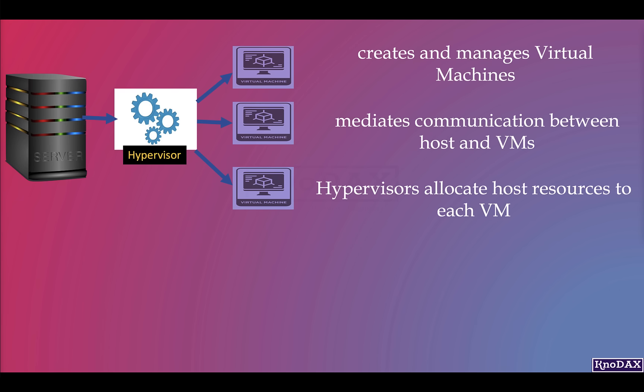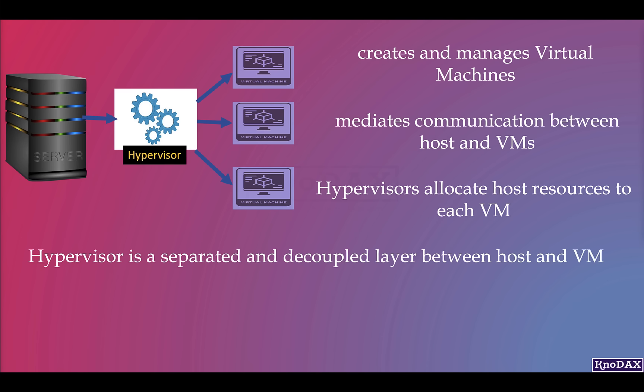Hypervisors allocate resources, or in other words, share host resources with each VM. Hypervisor is a separated and decoupled layer between the host and VM. A hypervisor allows multiple guest VMs to share host resources such as processor, memory, and storage, which means you install one hypervisor software and can set up multiple guest VMs on it.